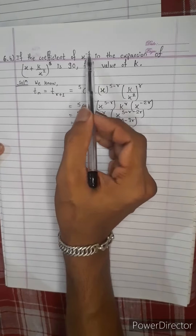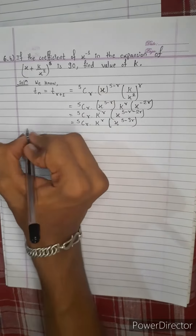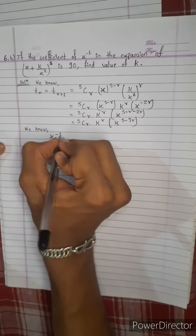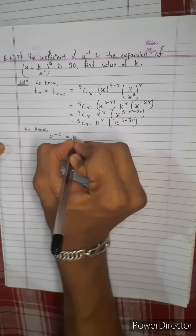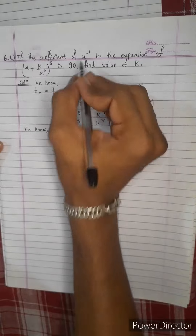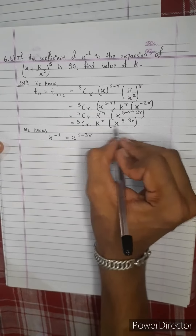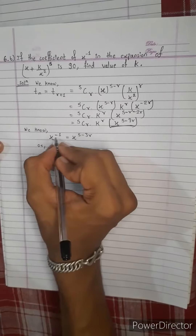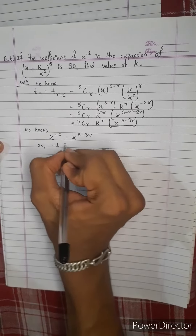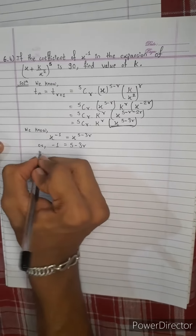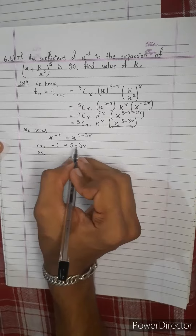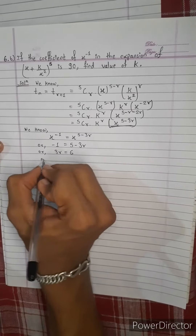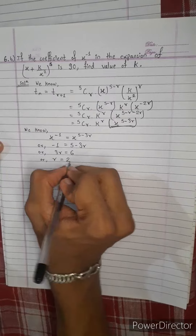To be x, in order to find the coefficient of x power minus 1: x power high minus 3r. We will see x power minus 1 and x will cut down. Minus 1 equals to high minus 3r, and we compare: 3r equals to 6, and r equals to 2.